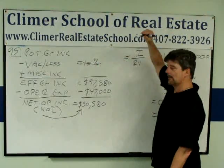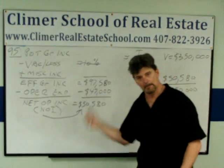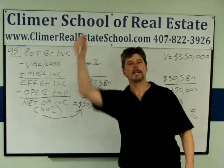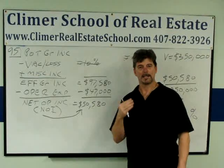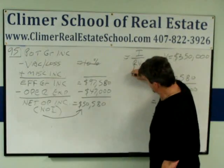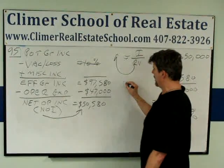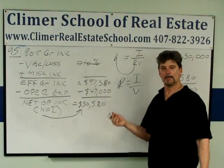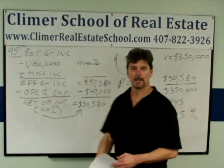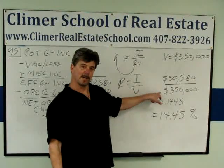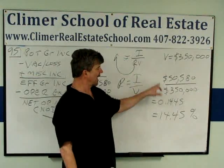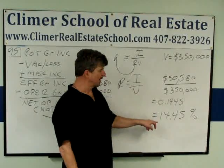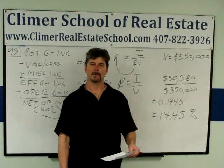Just imagine there's an equal sign here, and whichever one you want, you have on the end of a big rope, and you're swinging it across that equal sign so somebody else can grab it — you're swinging it over to the other side. In this case we need R, capitalization rate. So we're going to swing that cap rate over to the other side, which means R equals I over V. Now we just plug them in: I is $50,580, V is $350,000. Top number divided by the bottom number equals .1445, or 14.45% — so your correct answer is A.